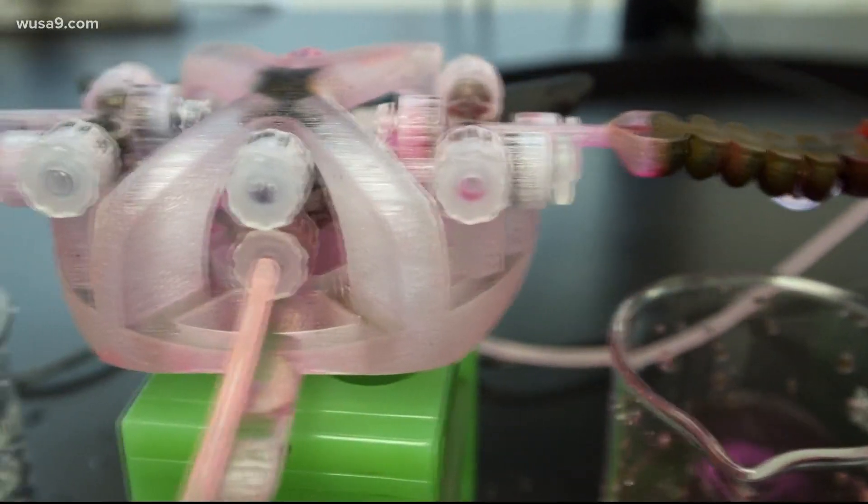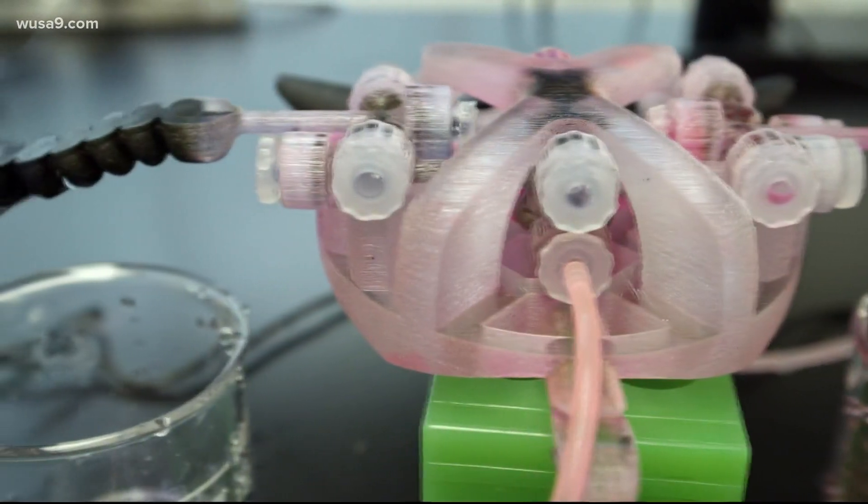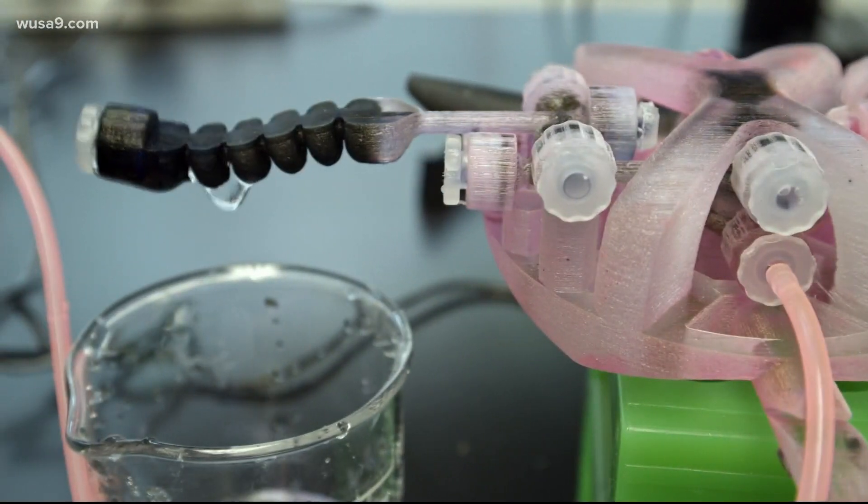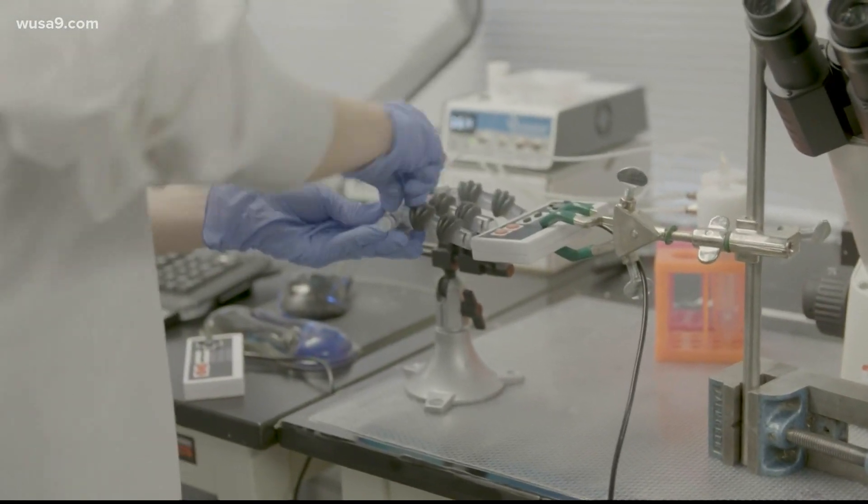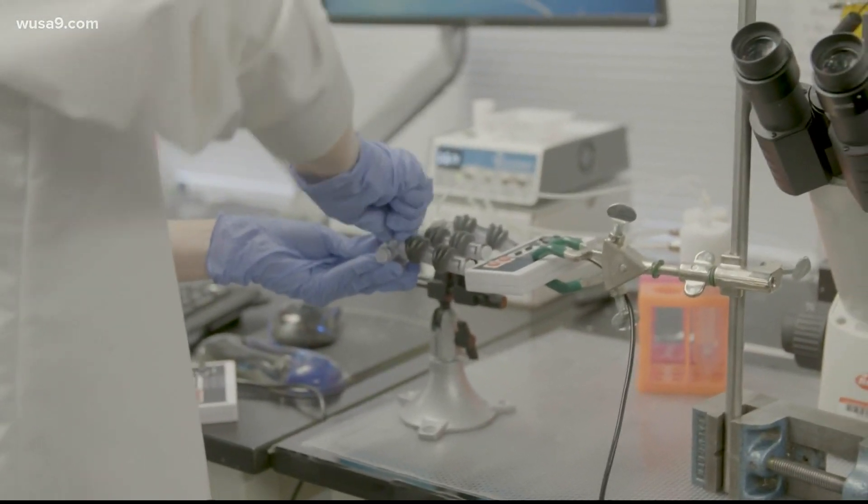Soft robots are made of flexible and soft materials and they are controlled using fluids like water and air. To show where that technology can go, Sokol and his team built a soft robotic hand from a 3D printer.